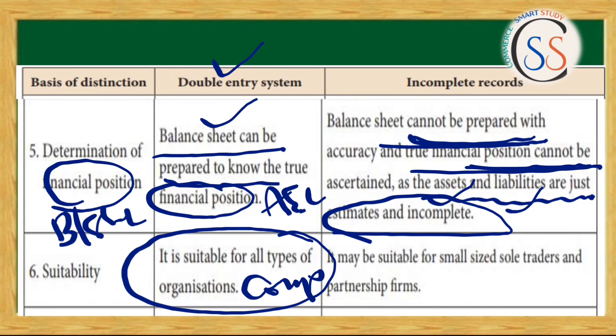The sixth difference is suitability. The Single Entry System is suitable for small-sized businesses and small businesses in general.